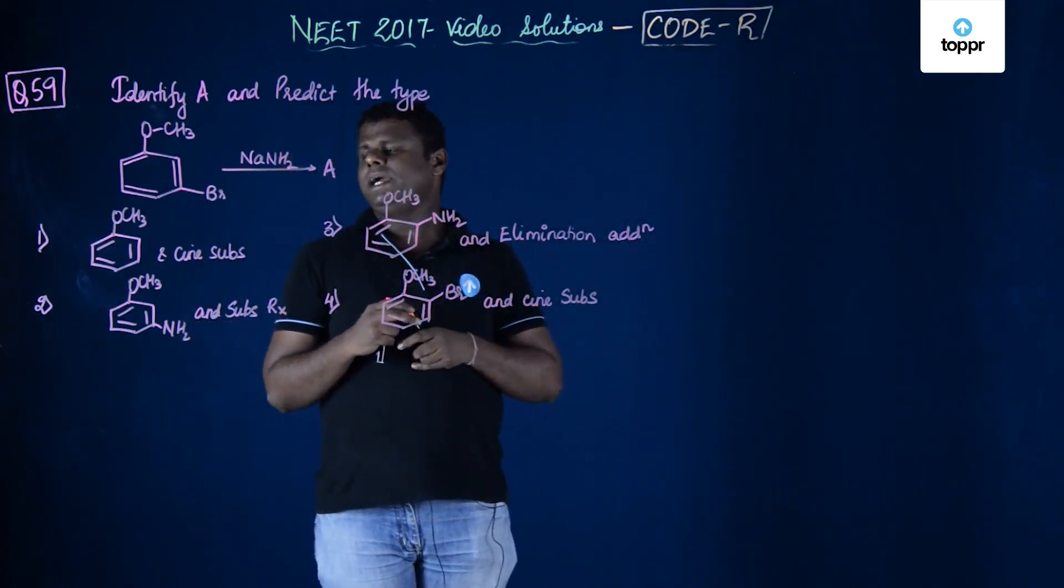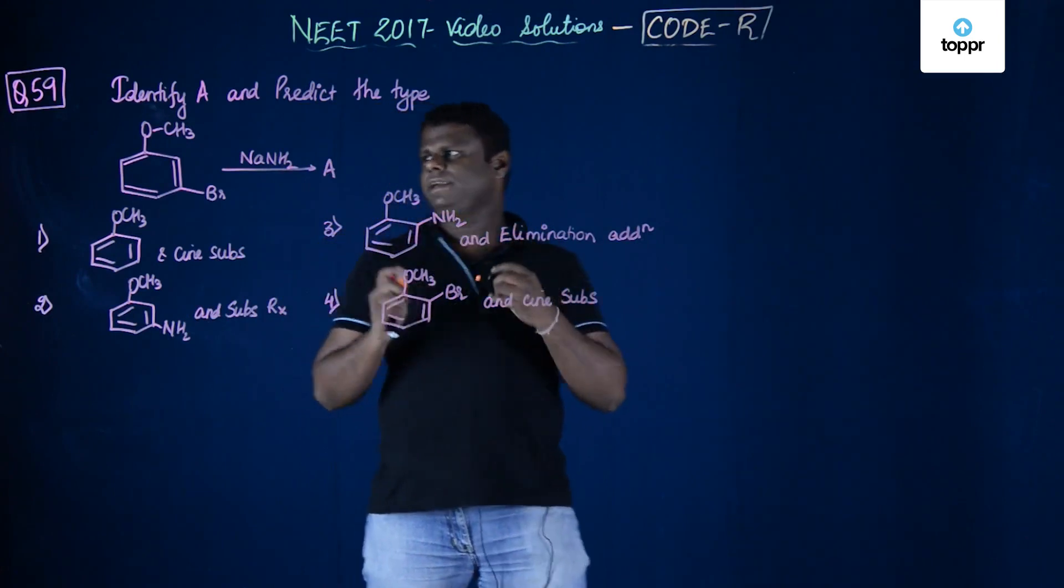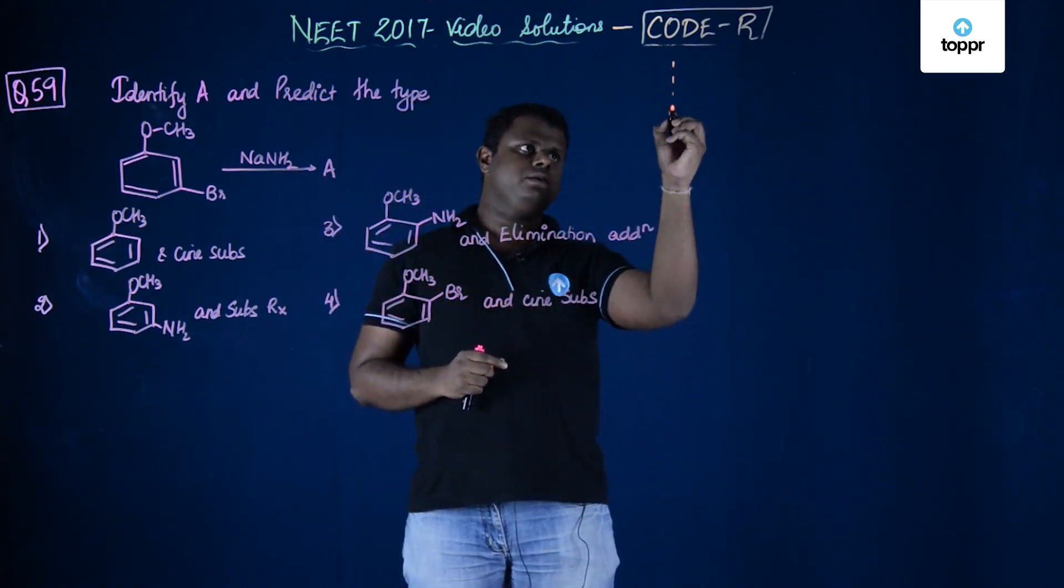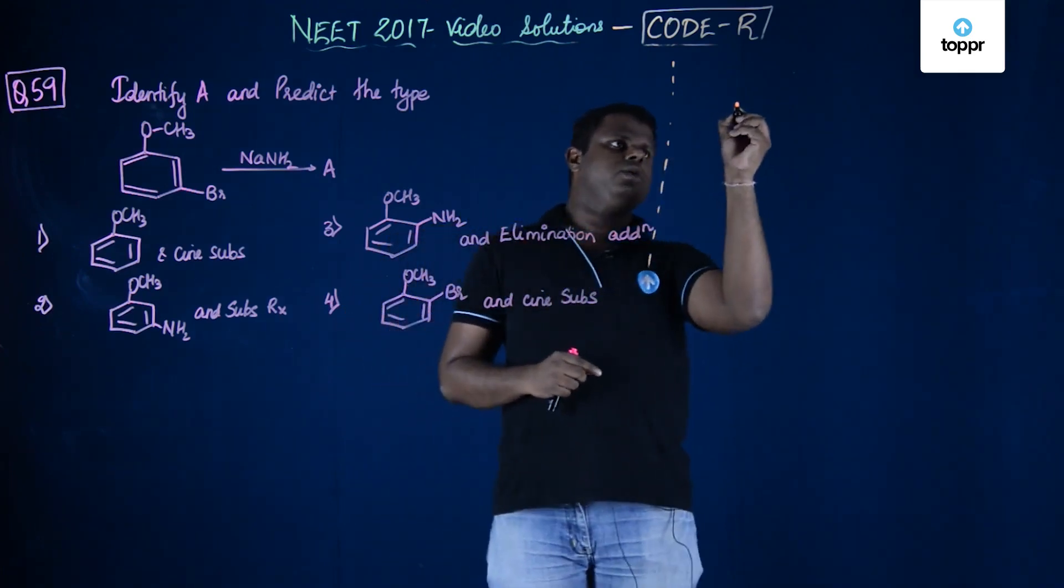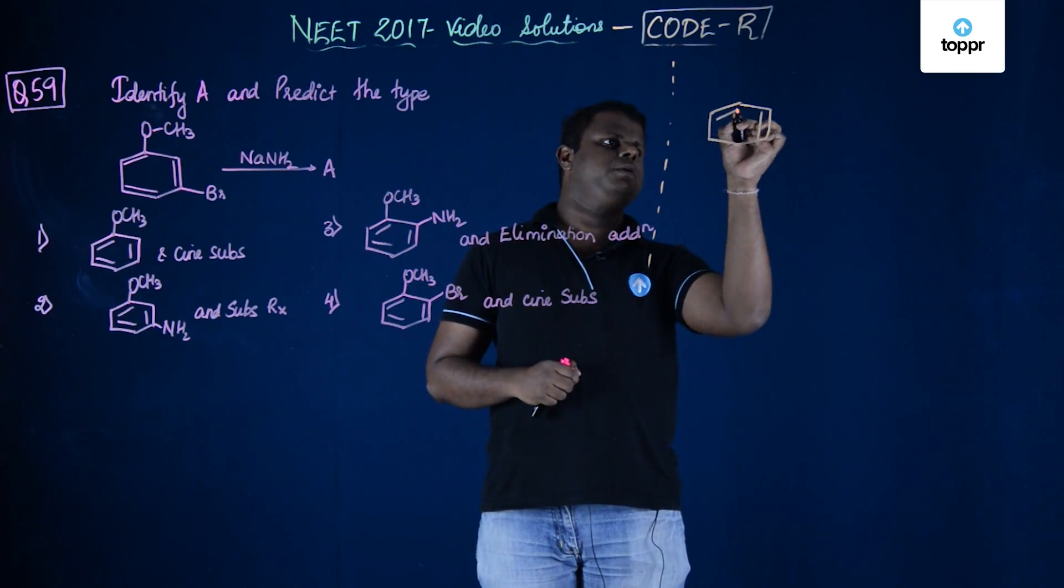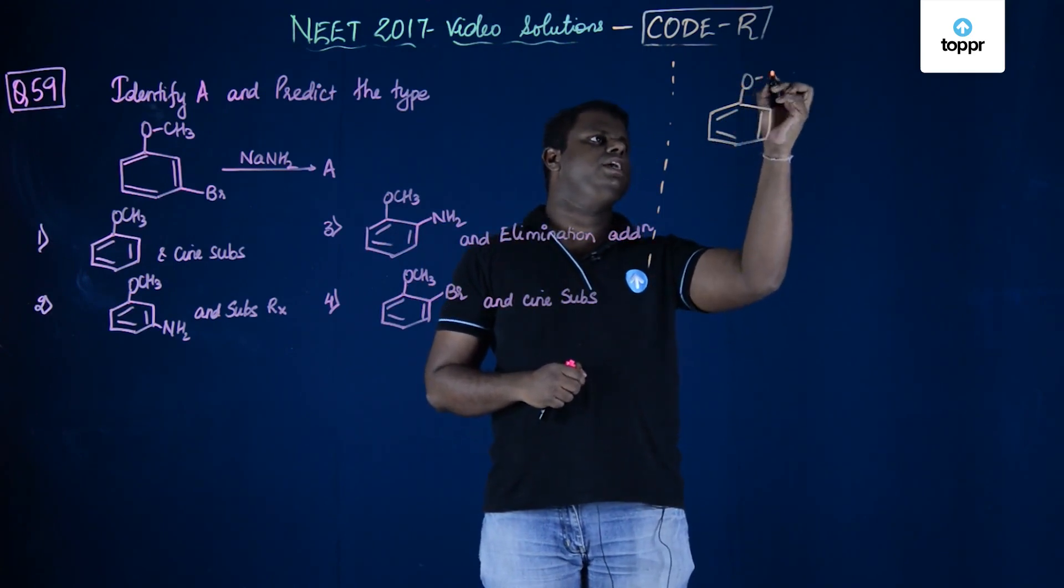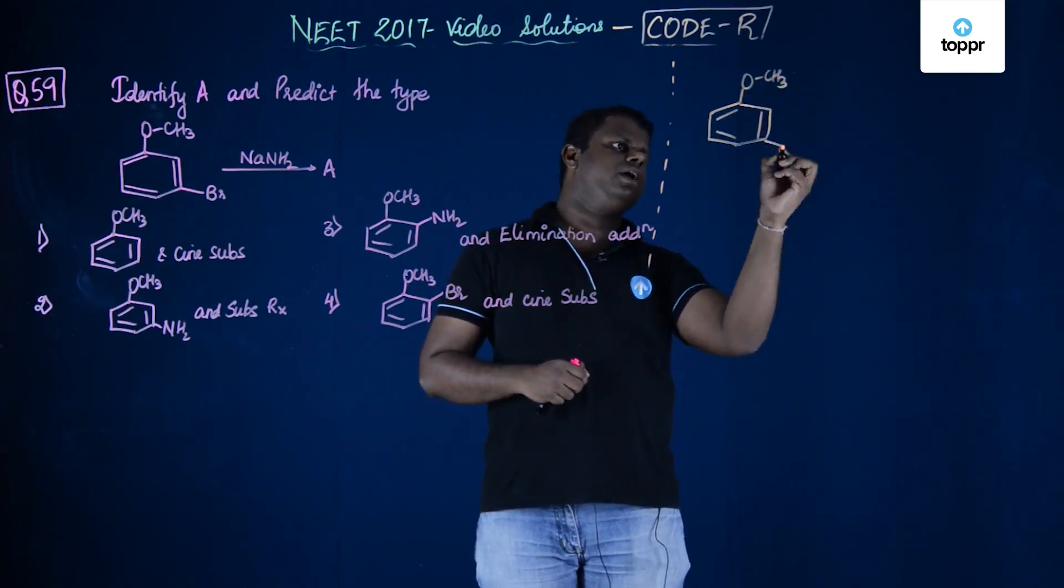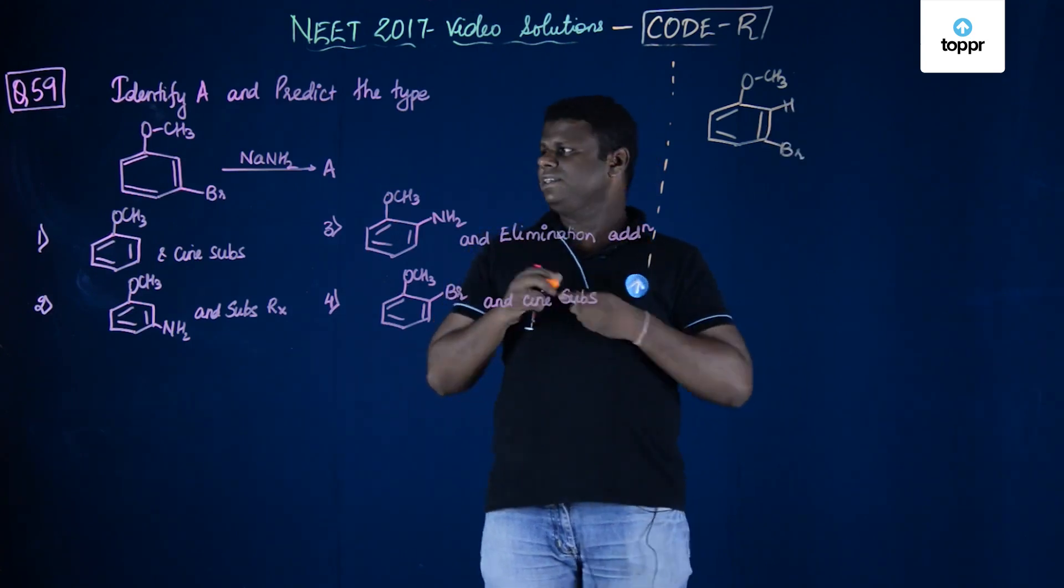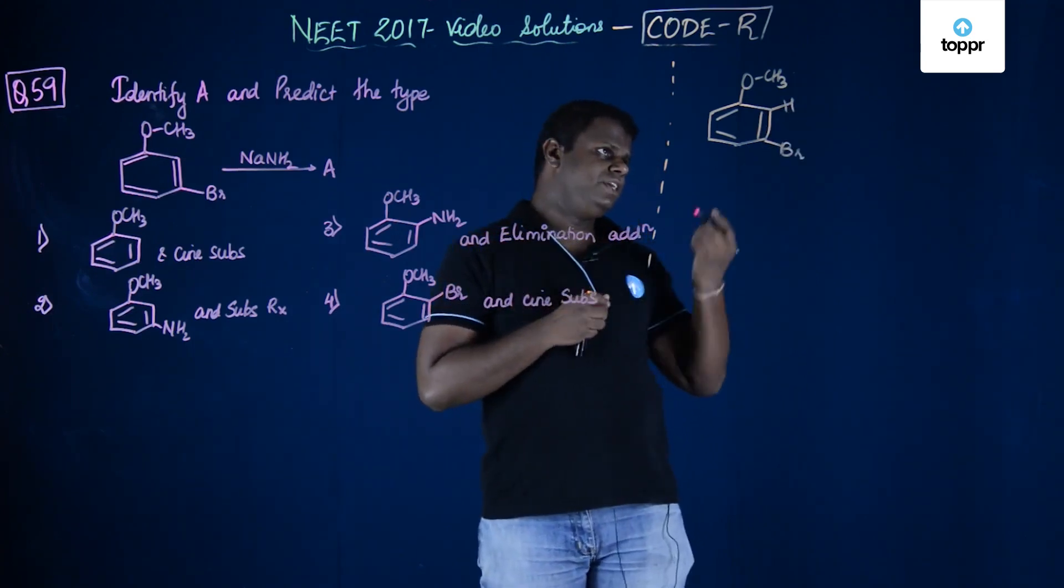You have been given metabromoanisol and on treatment with NaNH2, that is sodamide, what could be the product? Let's try to have a look. You have anisole. I'm just going to put the double bonds and I'm going to put OCH3 and there is a Br over here. Now, I'm going to show a hydrogen over here. What exactly happens?